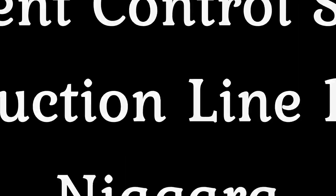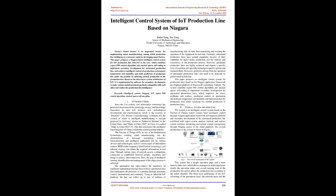Intelligent Control System of IoT Production Line Based on Niagara. Smart factory is an important carrier for implementing smart manufacturing, among which production line intelligence is a necessary path for developing smart factory. This paper proposes a Niagara-based intelligent control system for IoT production line with IoT as the core, which combines expert PID control algorithm and stack sparse self-coding to implement secondary development for automated production line, and achieves intelligent control of production environment temperature and humidity and fault prediction of production line under the premise of satisfying normal production of the production line. Based on the three-layer system architecture of IoT, it is supplemented by software for secondary development to make various module protocols perfectly compatible with each other and realize the production line intelligence.